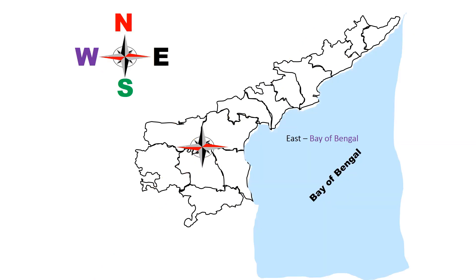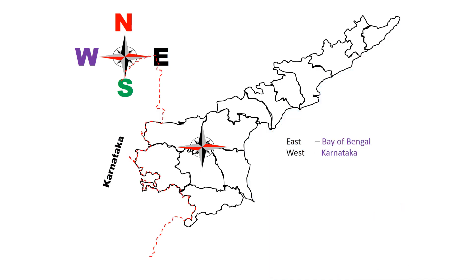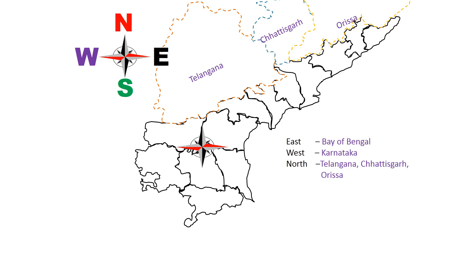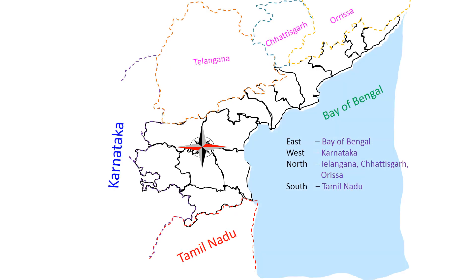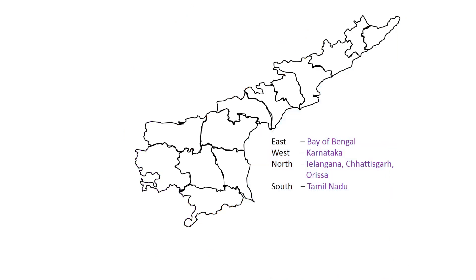Next, which areas or states or oceans are located in the four directions? In the East, the Bay of Bengal is located. In the West direction, Karnataka state is there. In the North, Telangana, Chhattisgarh, and Odisha states are there. In the South, Tamil Nadu state is there. So in four directions: East — Bay of Bengal, West — Karnataka, North — Telangana, Chhattisgarh and Odisha, South — Tamil Nadu.